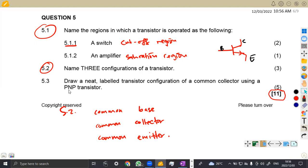Then the 5.3, we're asked to draw a neat labeled transistor configuration of a common... You see, even if you were confused, just imagine here they're saying configurations of a transistor. Now they are saying draw a neat labeled transistor configuration of a common collector. So that alone was supposed to give you some of the answers there to say, okay, if common collector is a configuration, then we can have these three. Anyways, maybe it was direct.